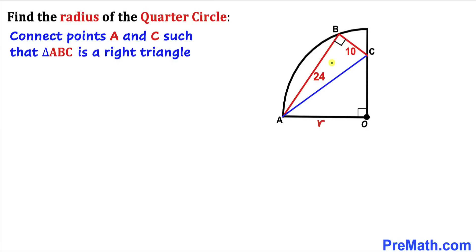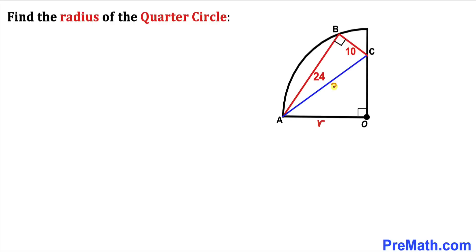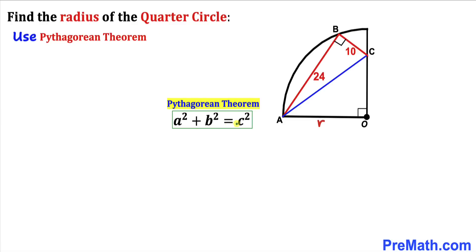We can see that triangle ABC is a right triangle. Let's calculate the side length AC. Since we are dealing with a right triangle, we are going to use the Pythagorean theorem: a² + b² = c². I'll represent the longest leg as c, calling the other sides a and b. In our case, a = 24 and b = 10.